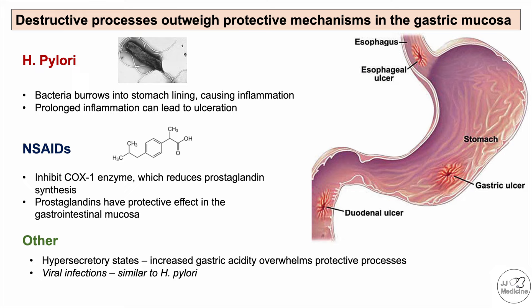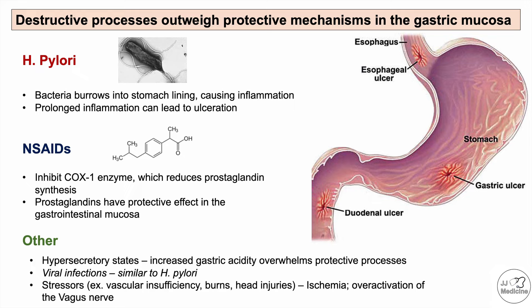Other stressors include vascular insufficiency, burns, and head injuries. Vascular insufficiency causes ischemia — if there is not enough blood getting to the stomach to nourish the GI lining, the protective and healing mechanisms are lost, leading to ulceration. Head injuries can cause overactivation of the vagus nerve, which increases gastric acidity, again increasing destructive processes and overcoming protective mechanisms to form an ulcer.